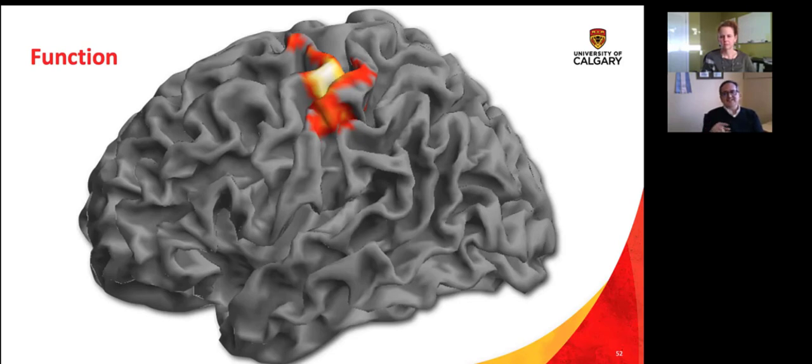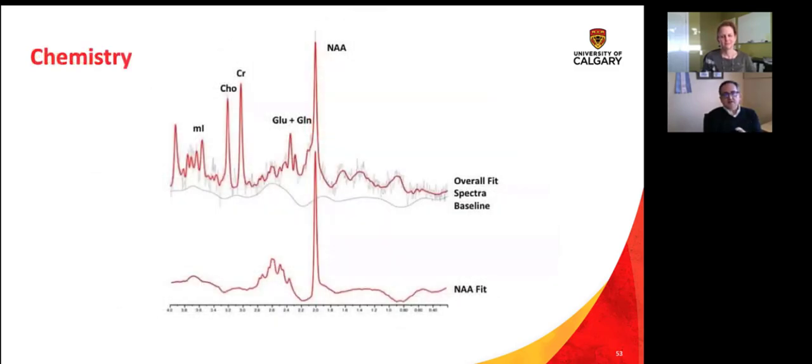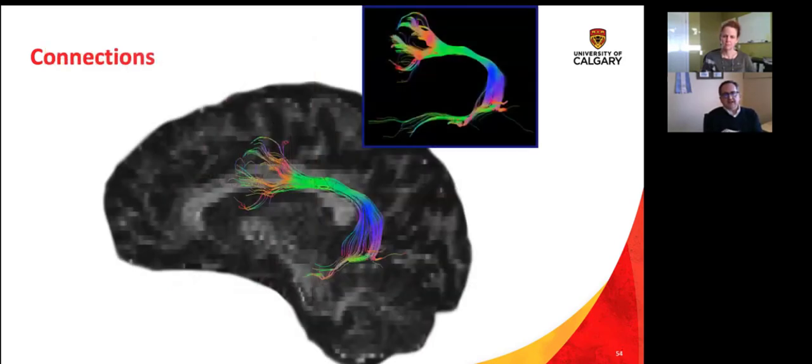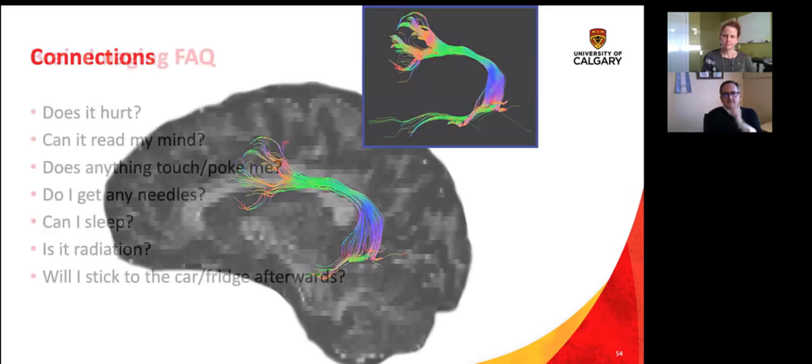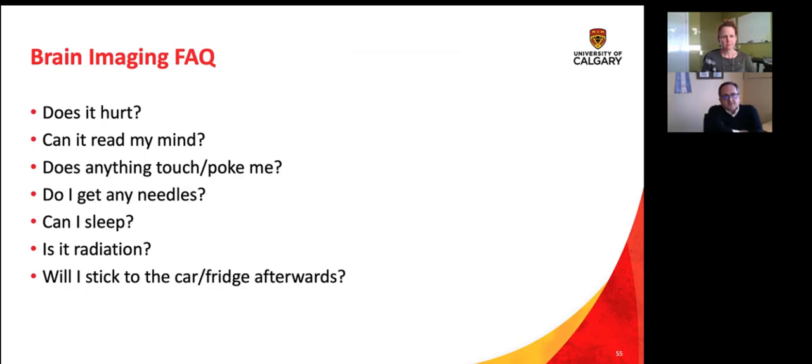It's really interesting to get kids to do math in the scanner though. That's like a whole fascinating field all by itself. We can look at brain chemistry, how different aspects of metabolism, cell building blocks, neurotransmitters even, how those change over time. We can look at how different parts of the brain connect to each other and talk to each other, which really comes in handy. And so some common questions we get about brain imaging: does it hurt? Can it read my mind? No. Does anything touch or poke me? Nope. Do you need to get any needles? Typically not for research type scans. Can I sleep? It's a great place to grab a nap. Is it radiation? It's non ionizing radiation, which means you could get an MRI scan every day of your life for the rest of your life, and you'd be fine. Nothing's going to happen to you.